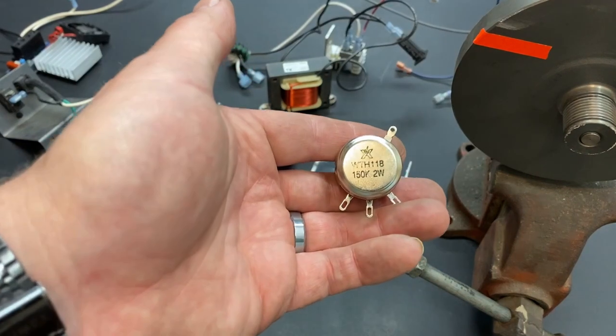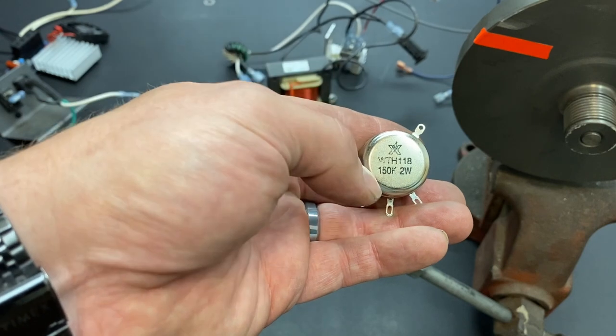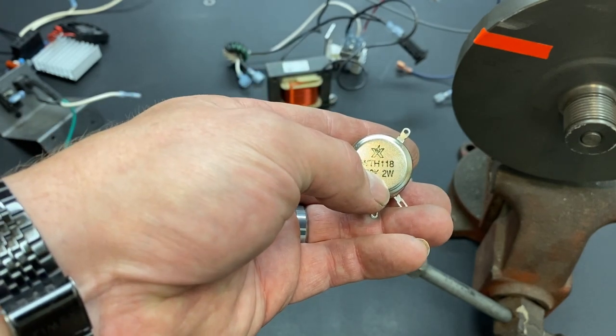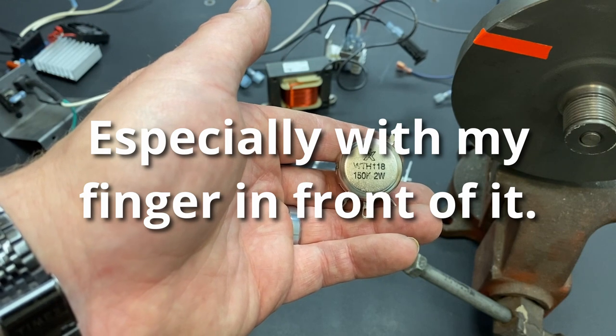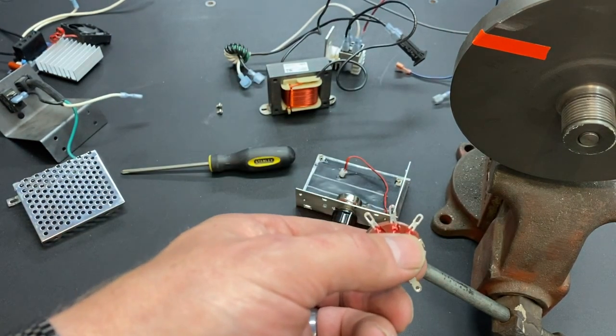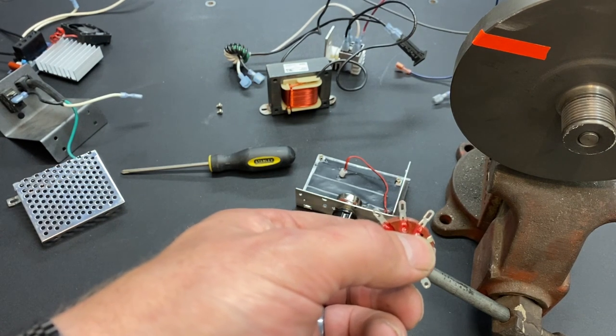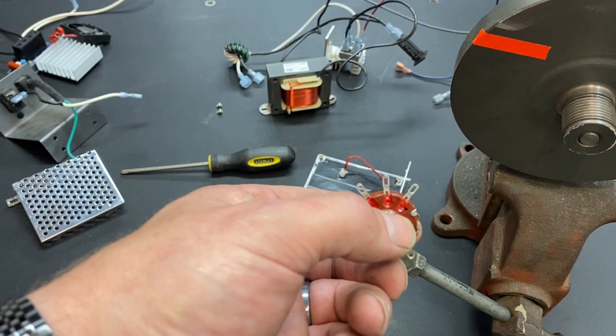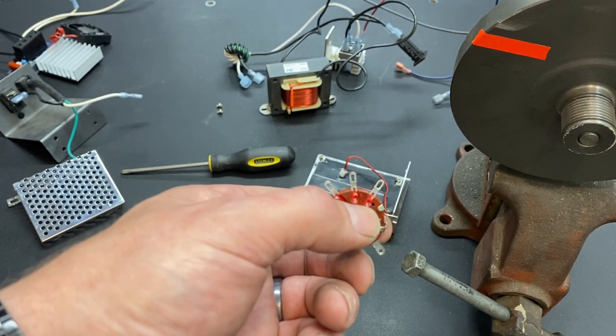So, this is 150 kiloohm potentiometer. You see that 1.5, the K is a little hard to read, but that's 150,000 ohms. And it's got three terminals. Now, most potentiometers have three terminals. The potentiometer you take out of the SCR voltage controller will probably have two only because one has been removed.